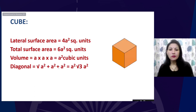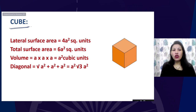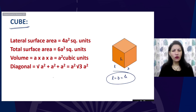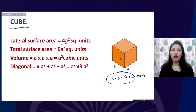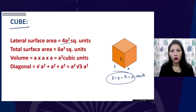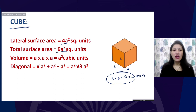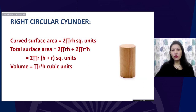A cube is a specific type of cuboid where length, breadth, and height are all equal. If each edge equals a units, then the lateral surface area of a cube is 4a², the total surface area is 6a², the volume is a³, and the diagonal is √3 × side.